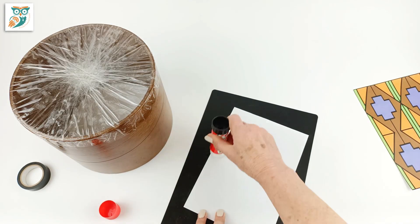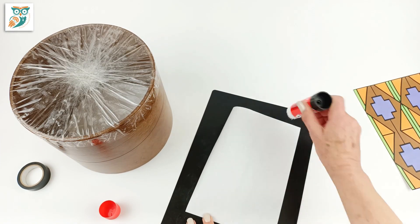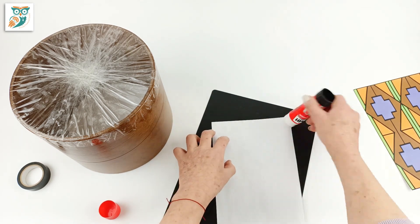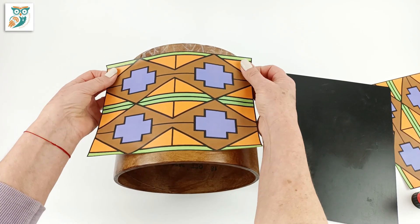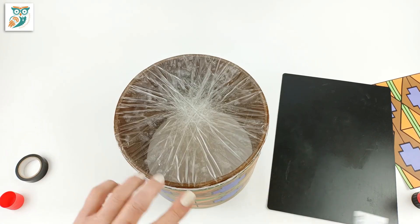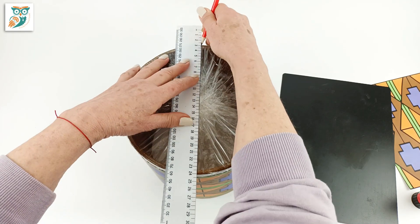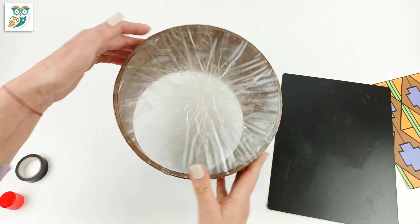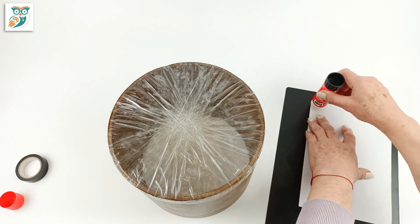Now we're going to decorate. You can use any method to decorate your drum—you could paint it, use stickers, or you can do like we did and go on the computer to create graphics that you print off and glue onto your drum. I highly recommend this approach as it encourages your kids to use technology and learn some graphic design skills.